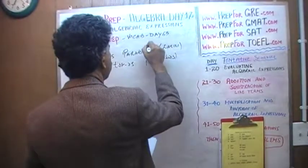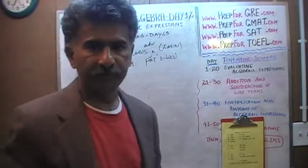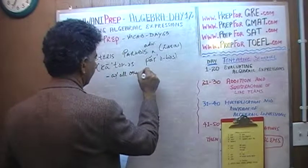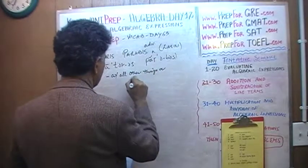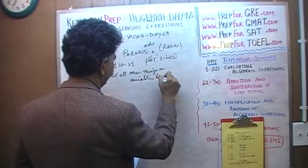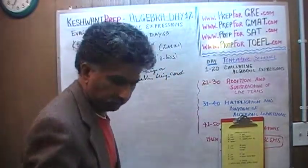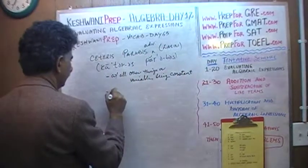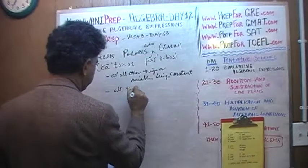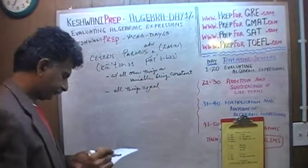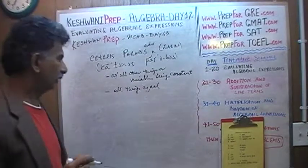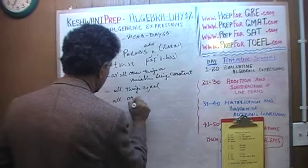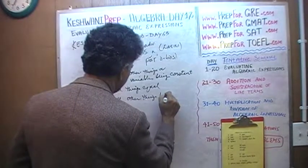Ceteris paribus. What does it mean? It means 'with all other things being constant' — or 'with all other variables being constant.' All things equal. All factors being equal. All other things being constant. That is ceteris paribus.